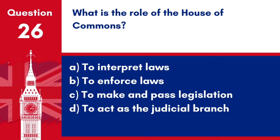Question 26. What is the role of the House of Commons? A. To interpret laws. B. To enforce laws. C. To make and pass legislation. D. To act as the judicial branch. Answer: C. To make and pass legislation. The primary role of the House of Commons is to make and pass legislation.